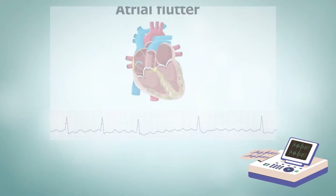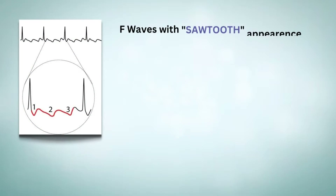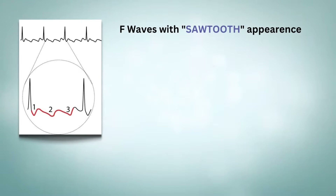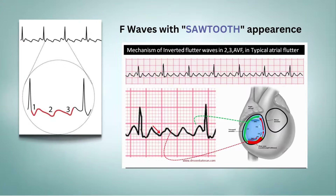What are the ECG features of atrial flutter? First, there are rapid regular undulations or F waves that cause a sawtooth appearance. F waves are best seen in leads 2, 3, AVF and V1. Usually these F waves are inverted in the inferior leads, and there will be no isoelectric baselines between the F waves.